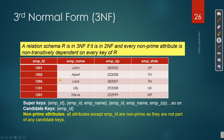This is the first example of 3NF. We have a table with employee ID, employee name, employee zip code, and employee state. I will tell you about the functional dependencies: employee ID determines employee name and zip code, and zip code determines state.